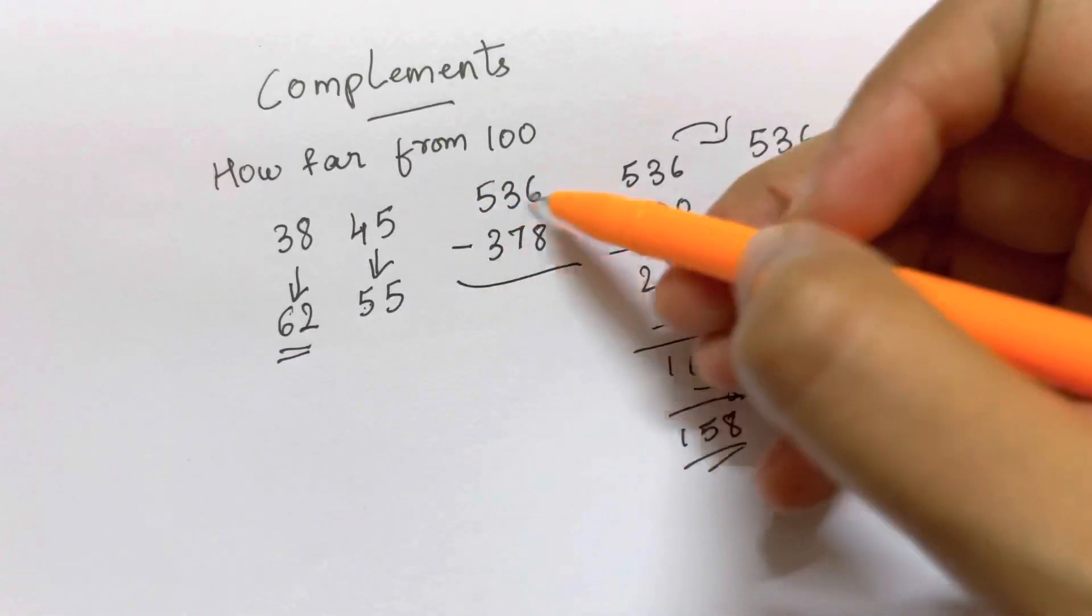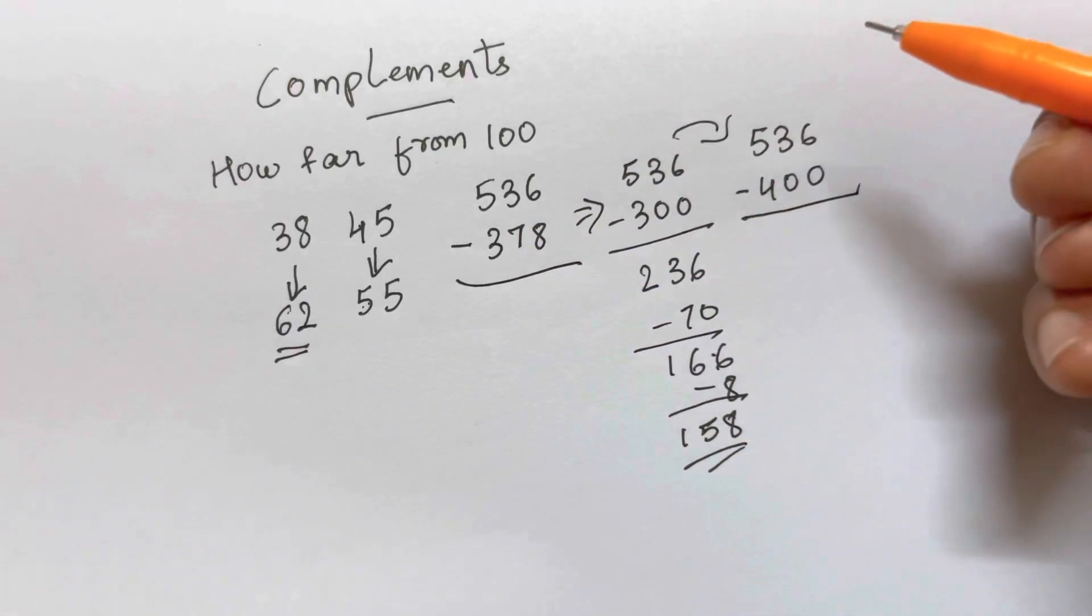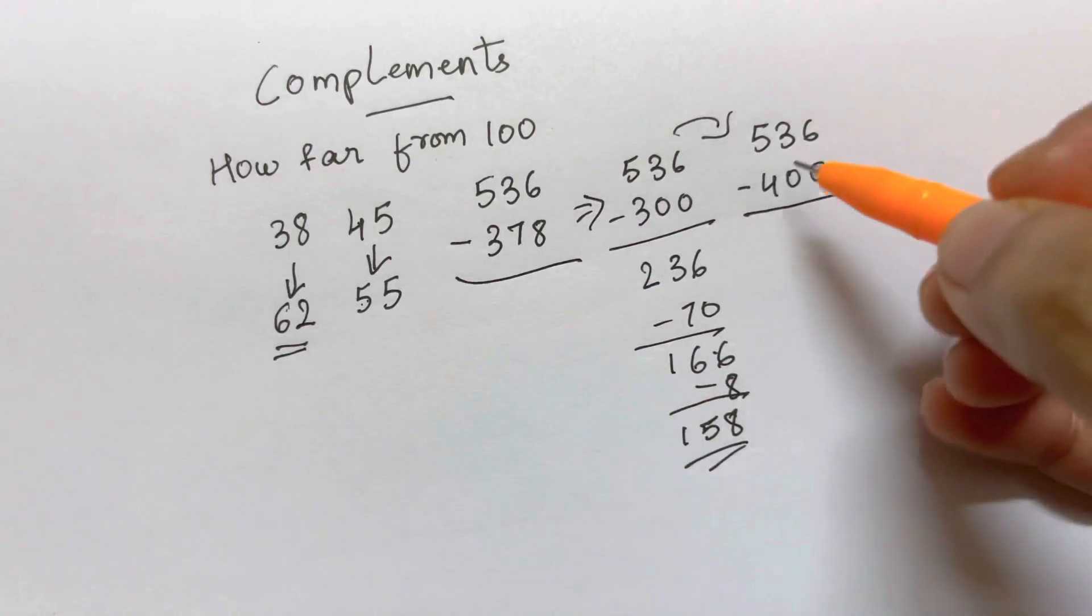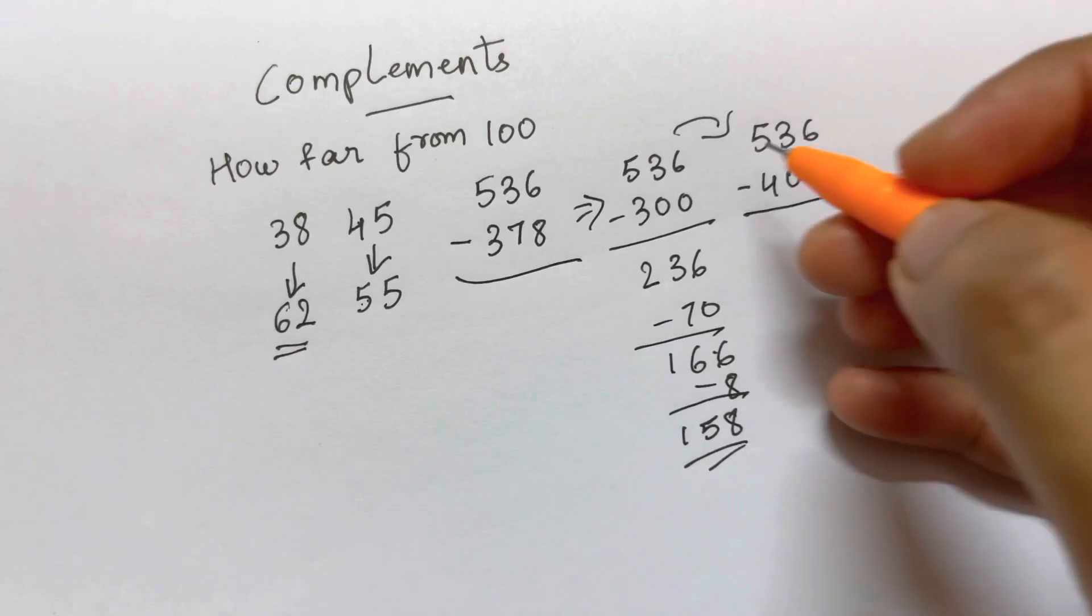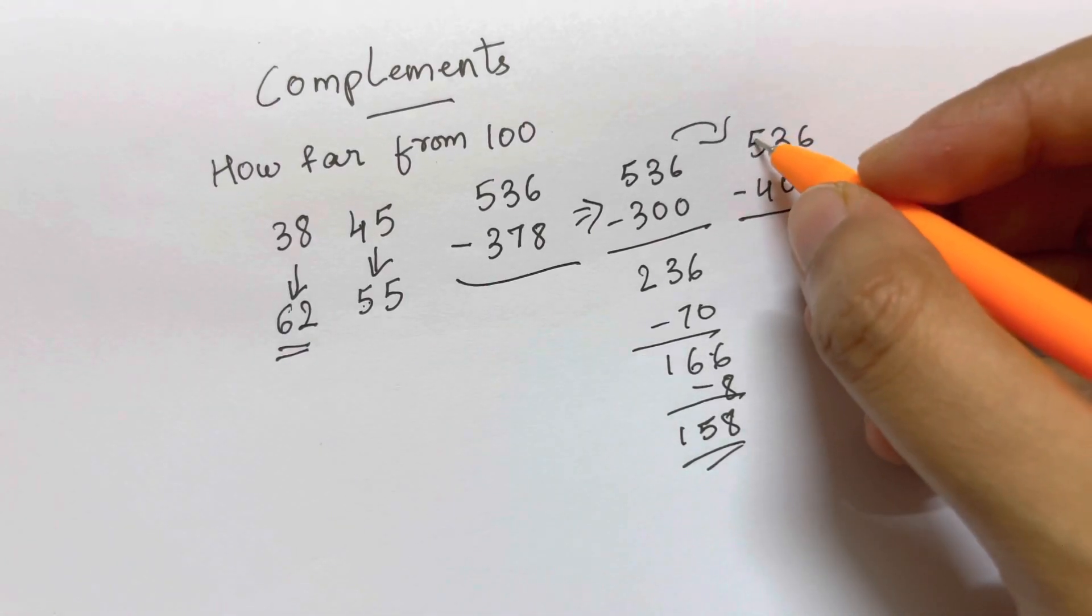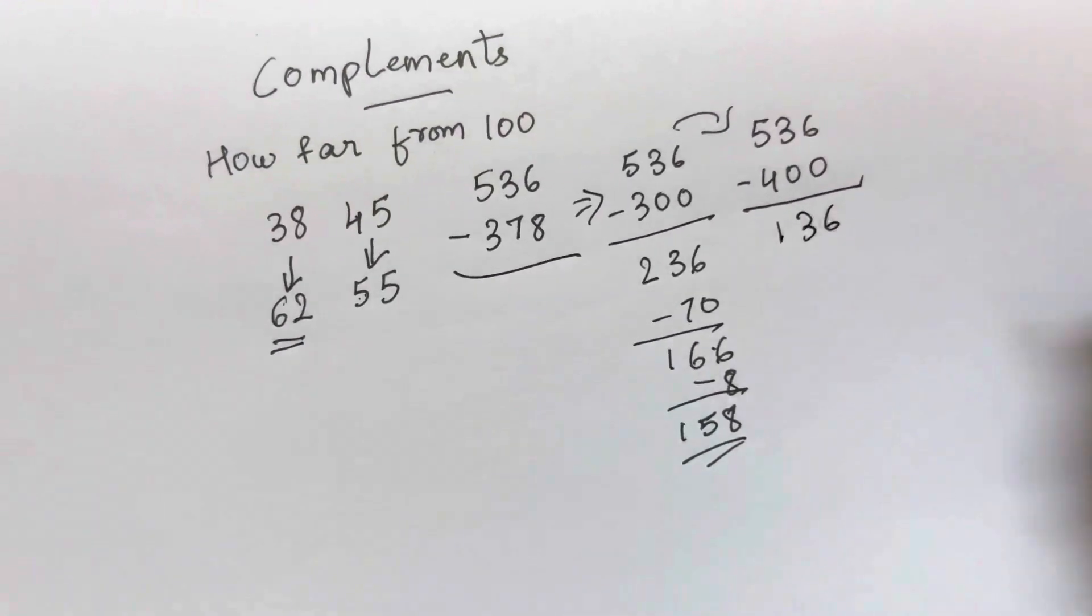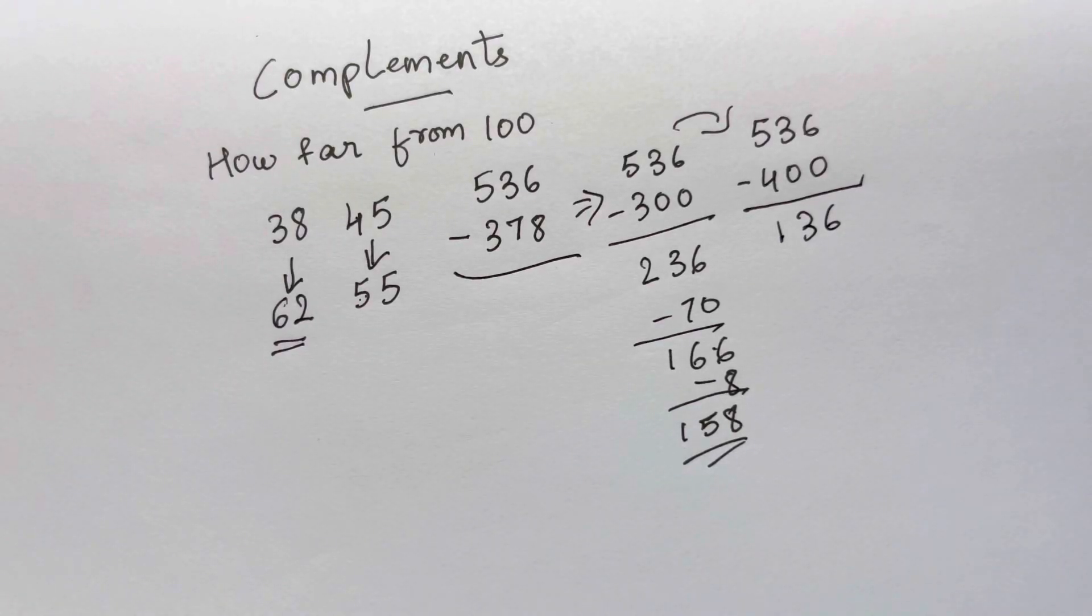536. You have round of 378 to 400. Now, 536 minus 400 is just 100. 5 minus 4, 136. This is very quick in your mind. Yes. And now...